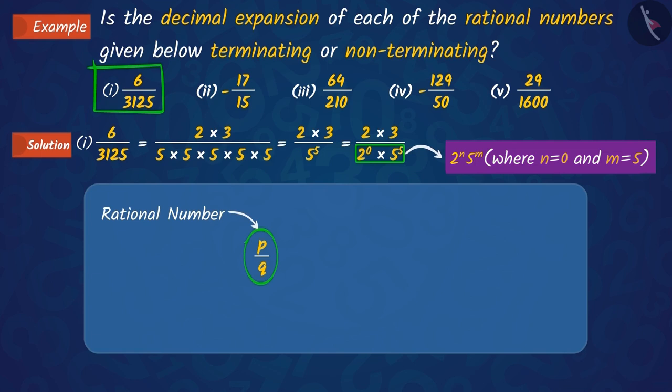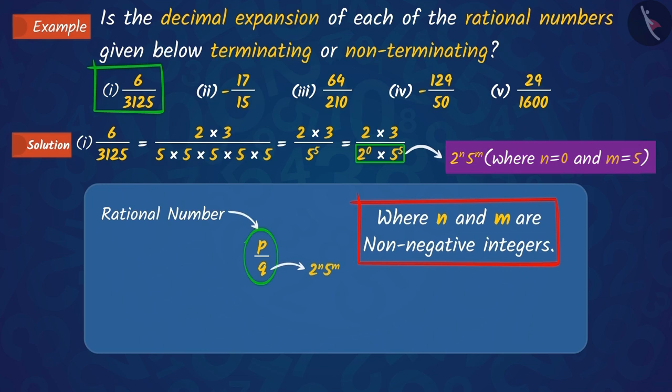In our previous video, we learned that in a rational number p upon q, if q is in the form of 2 raised to n into 5 raised to m, where n and m are non-negative integers, then the decimal expansion of the number is terminating.